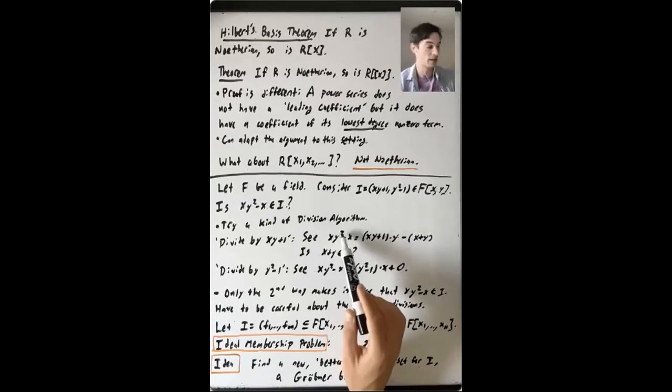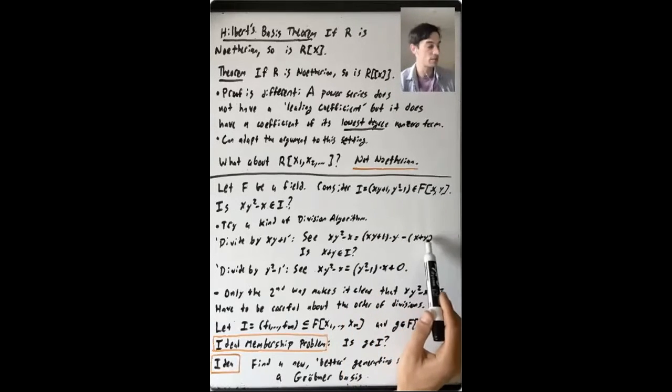So you subtract, the X, Y squareds cancel, and you're left with minus X plus Y.